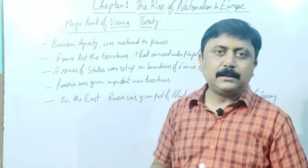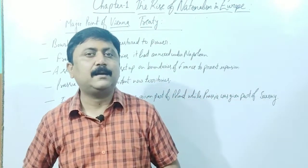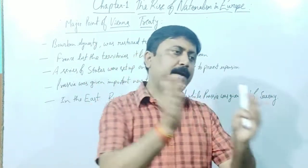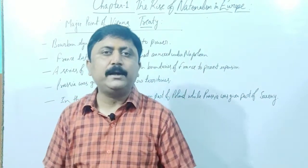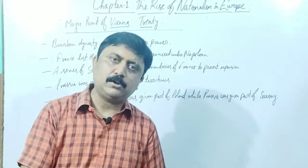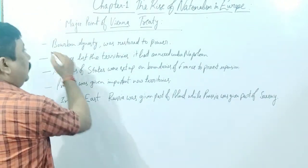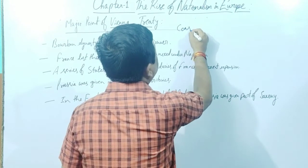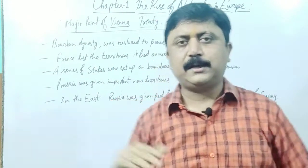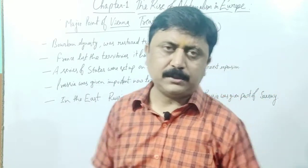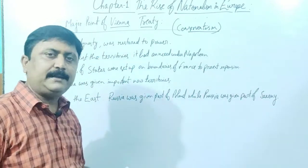Since Napoleon had now been defeated, these countries had to make decisions together — similar to how in the Hitler chapter in Class 9, the Treaty of Versailles imposed many conditions on Germany after Hitler was defeated. Something similar happened here when Napoleon was defeated and the Treaty of Vienna was signed under the leadership of Duke Metternich, with Britain, Prussia, Austria, and Russia. This treaty was based on conservatism — the traditional way of thinking, orthodox views, those who did not accept changes quickly — they are called conservatives.